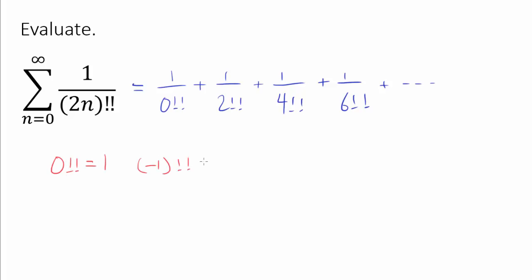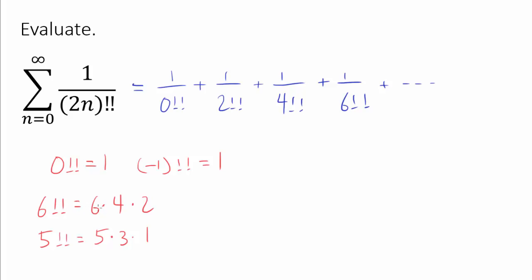Also, negative 1 double factorial is 1 if you're interested. For even positive integers such as 6, the double factorial is the product of all even numbers from 6 down to 2. For odd positive integers such as 5, the double factorial is the product of odd integers from 5 down to 1. So when it's even, you multiply the evens; when it's odd, you multiply the odds.